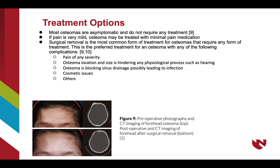Treating an osteoma is specific to the patient and case. Most osteomas are asymptomatic and don't require treatment, but if there is mild pain, an osteoma can first be treated with minimal pain medication. For symptomatic osteomas that do require intervention, surgical removal is the most common form of treatment. Osteomas that cause pain, have a size and location hindering any physiological process, block sinus drainage leading to infection, or create cosmetic issues are all indicated for surgical removal. Figure 9 compares pre-operative and post-operative imaging of a forehead osteoma that was indicated for surgical removal.